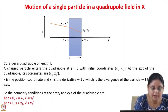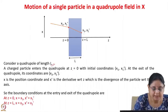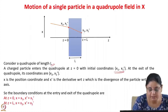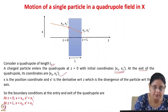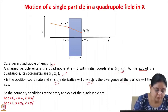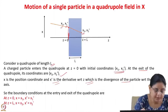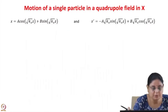Consider a quadrupole of length L. The coordinates of the particle at the entrance are x1 and x1', and at the exit they are x2 and x2'. The charged particle enters at z = 0 with initial coordinates x1 and x1'. At the exit, the coordinates are x2 and x2'. Here x' is the derivative with respect to z, also called the divergence of the particle with respect to the z-axis.